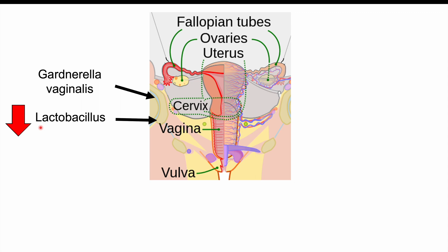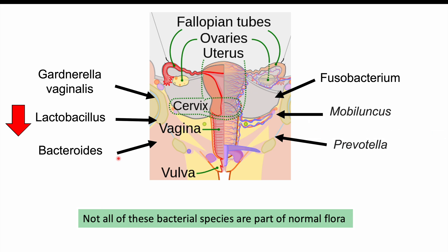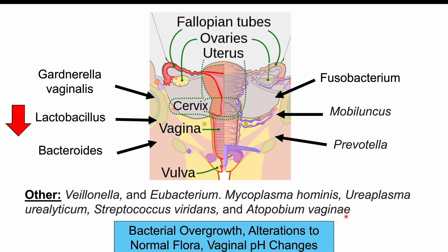Another bacterial species associated with BV is Lactobacillus. Alterations in Lactobacillus — specifically reductions in the number of the species — also play a role in getting this condition. Because of other disruptions, we can see reductions in Lactobacillus, which can cause worsening issues with other bacterial species. Bacteroides, Fusobacterium, Mobiluncus, and Prevotella have all been associated with BV as well. Other species shown to be altered include Veillonella, Eubacterium, Mycoplasma hominis, Ureaplasma urealyticum, Streptococcus viridans, and Atopobium vaginae.